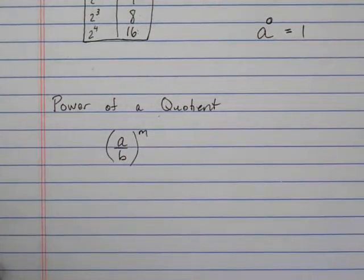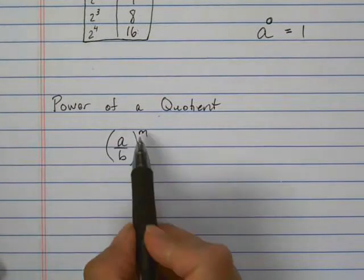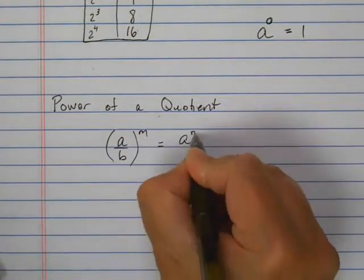When you have a quotient, just like if you had two things multiplied in here, the rule is you'll take each one of those things to that power.